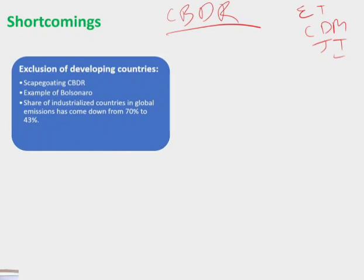If you talk about developing countries, these are countries in which per capita income is less. You will define developing countries as those whose span of independence is less. Because if you look at climate change, we have noted that China is the biggest carbon emitter.